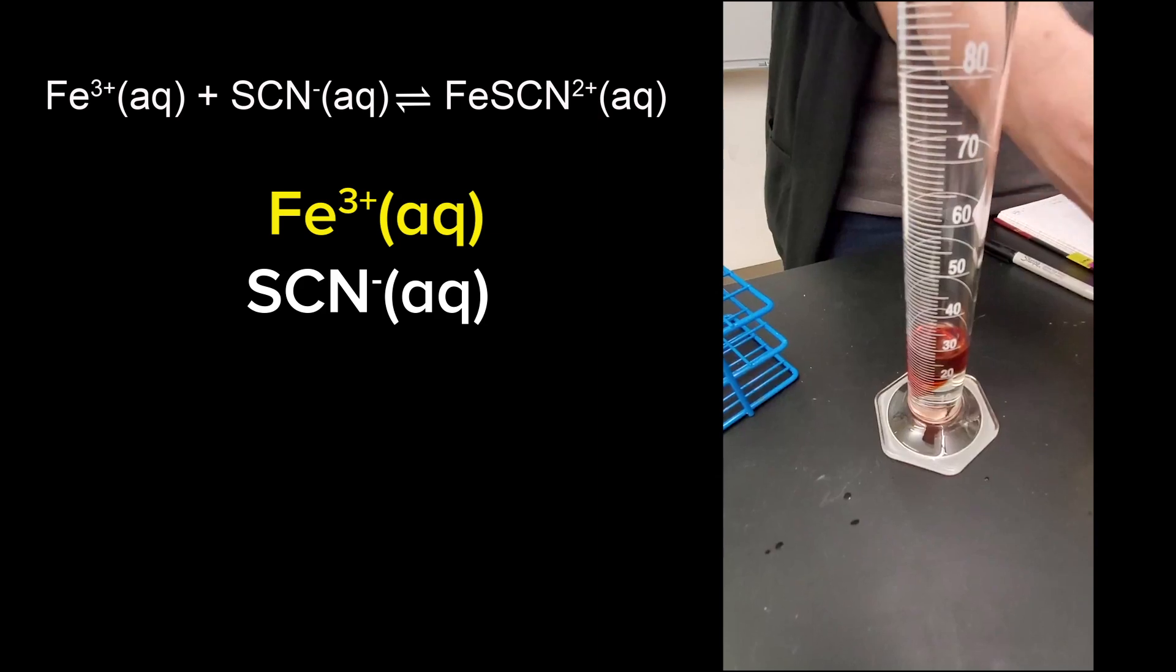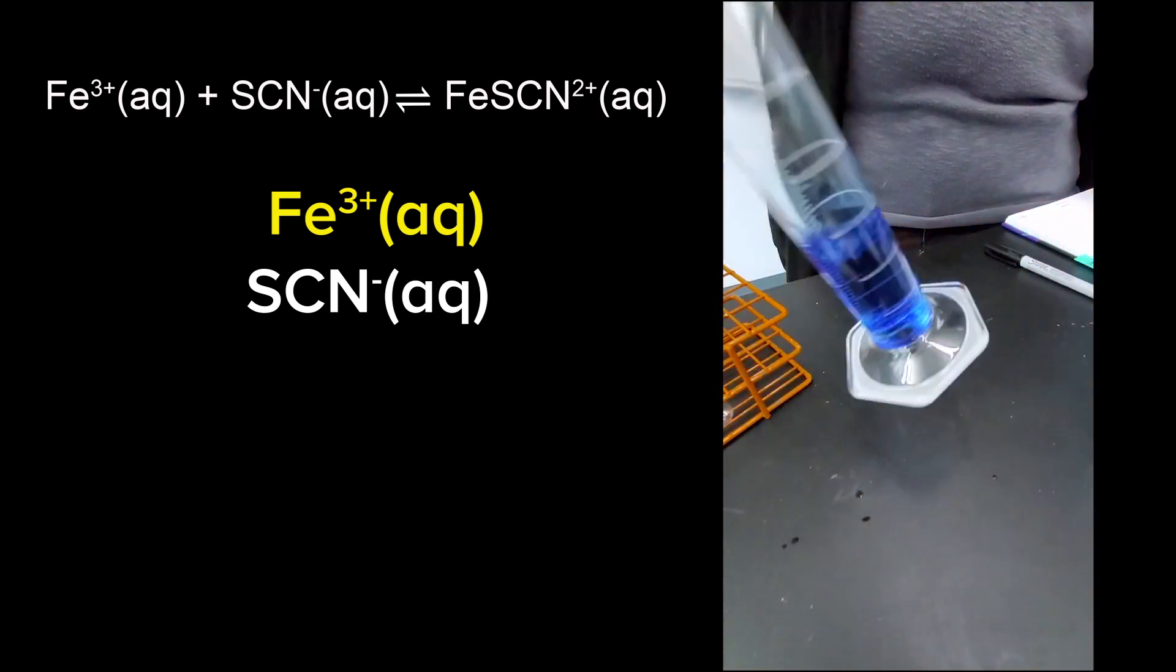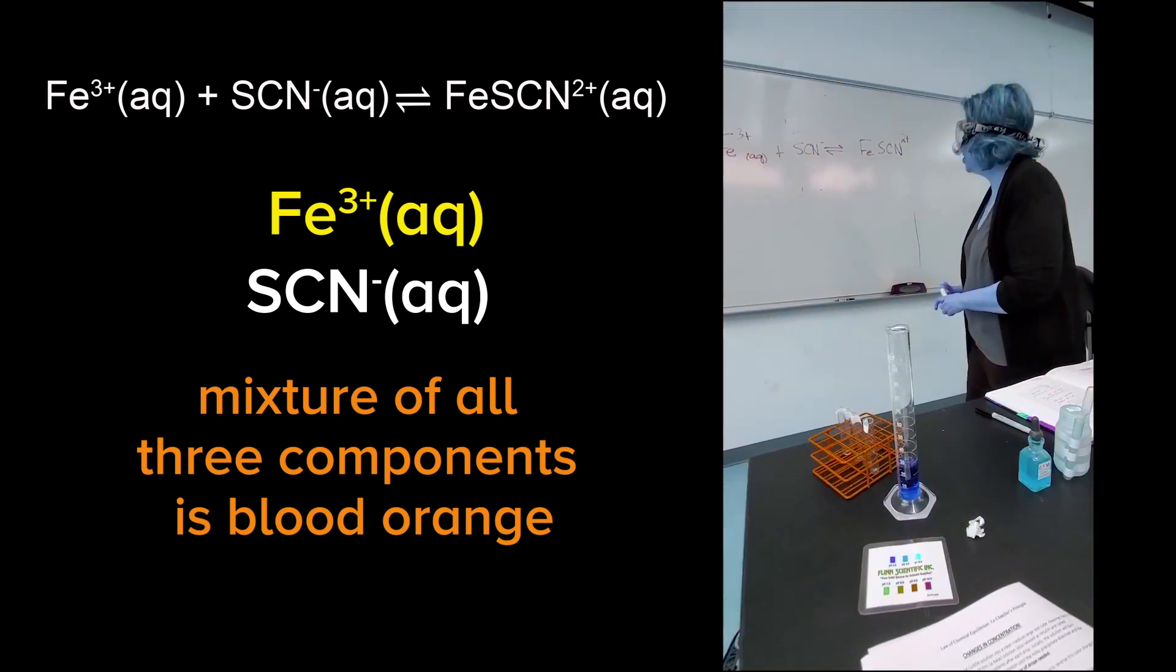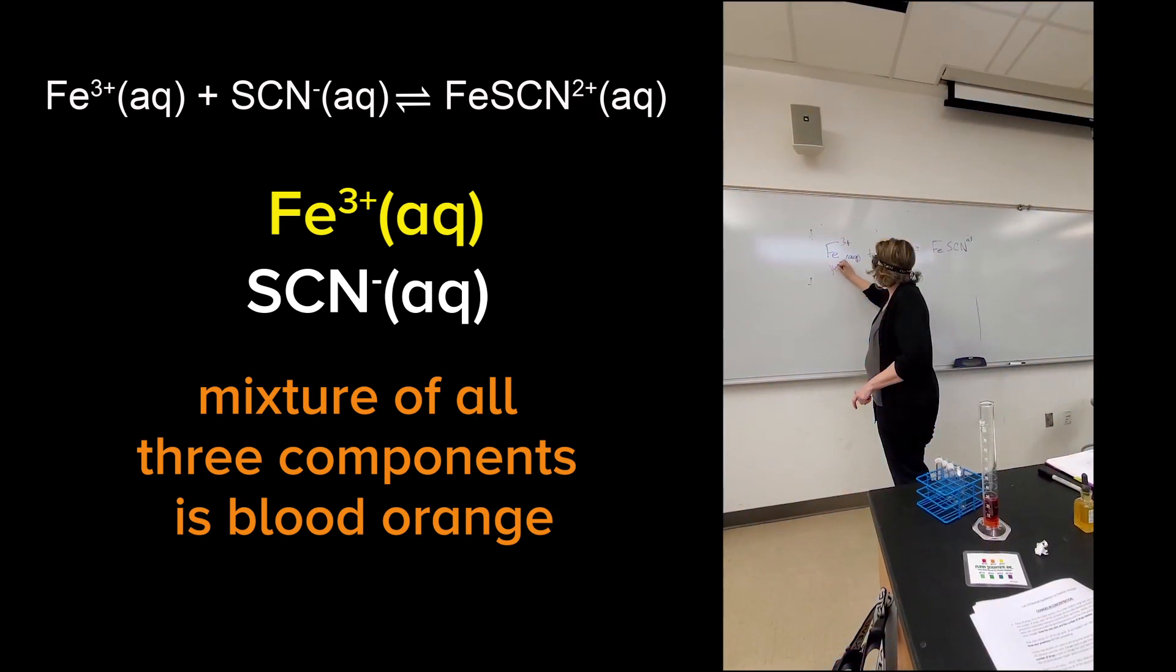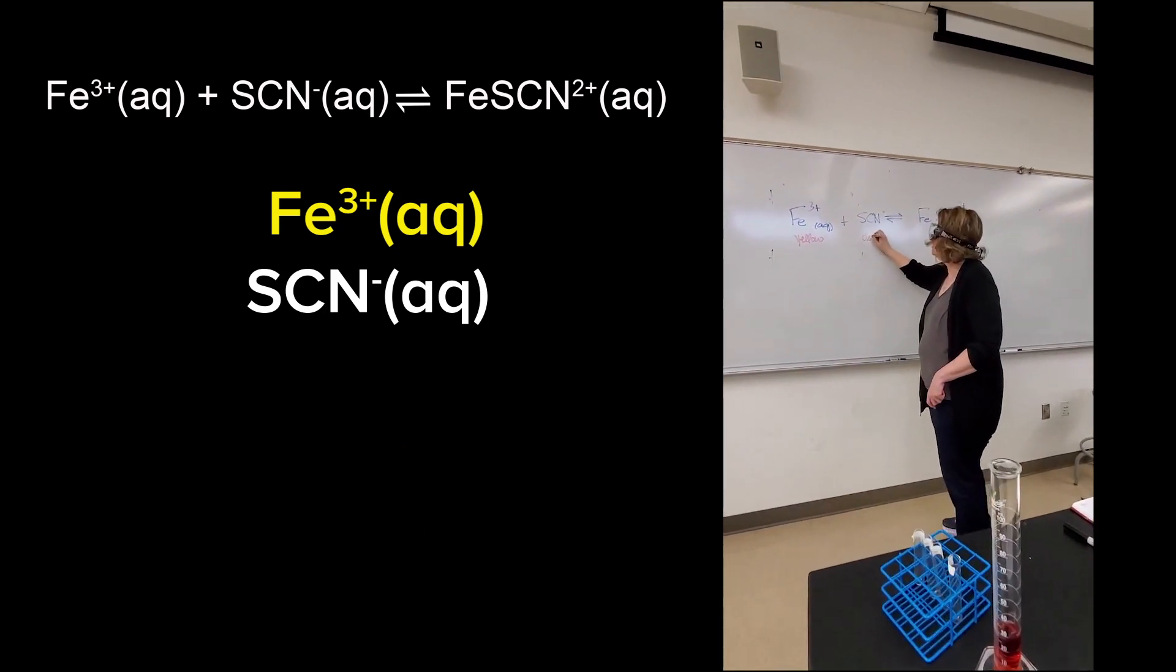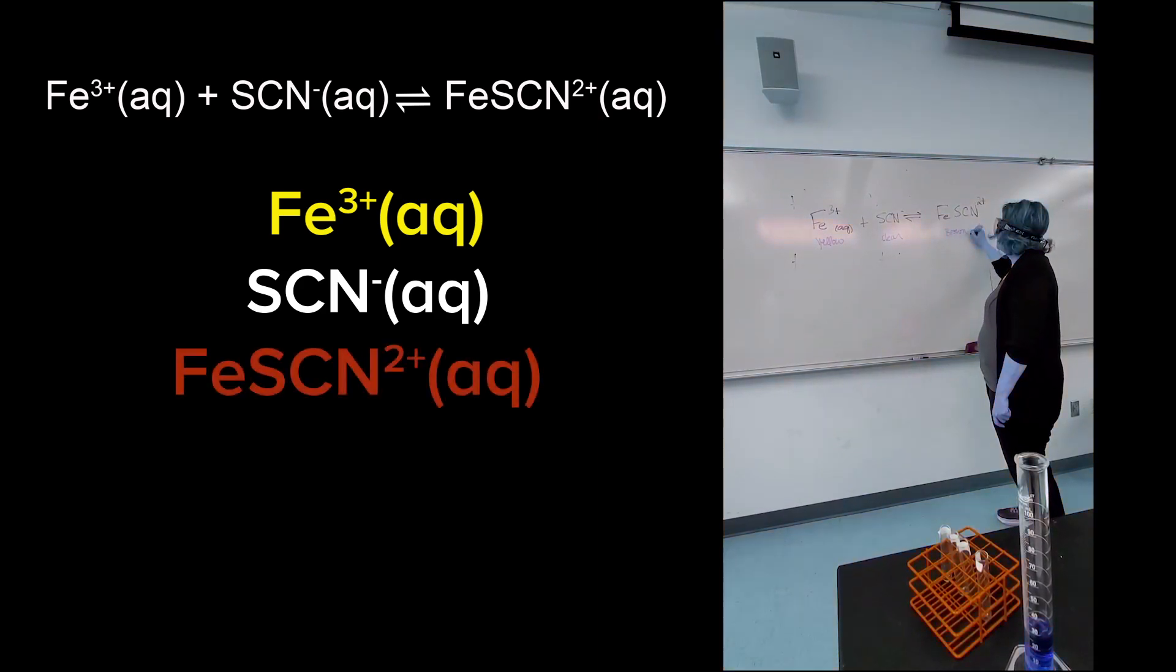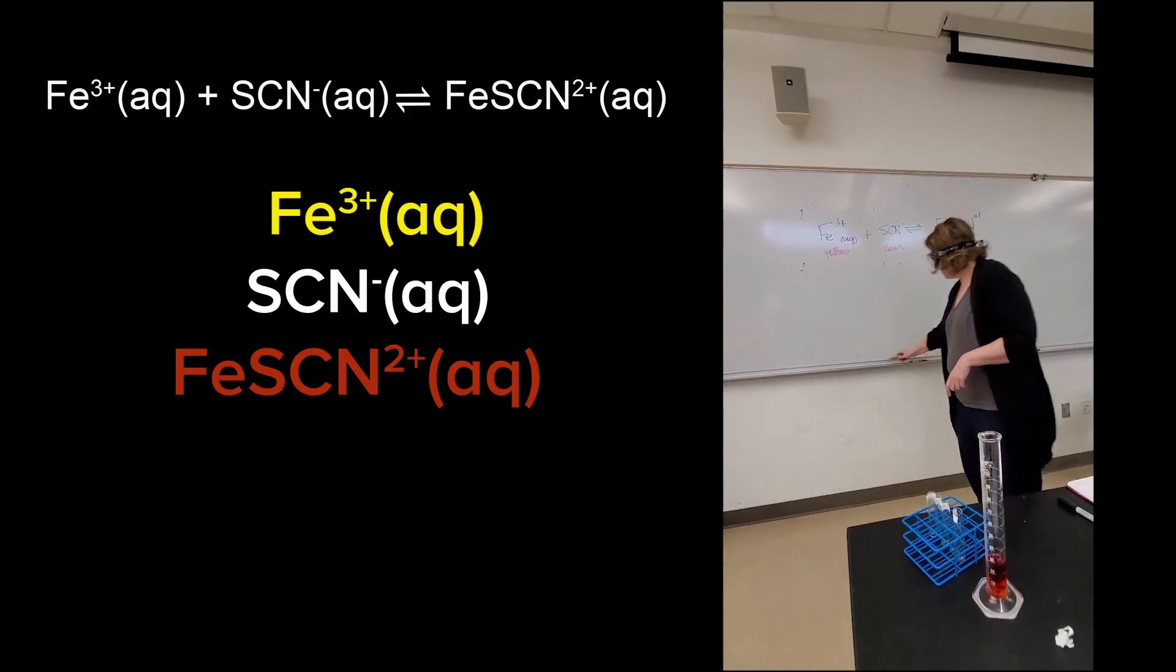So this may look familiar. We've done this. We've measured this one before. This complex is, what color would you say that is? Orange? Blood orange. Okay. So the equilibrium that I just established is that I started with the iron, which is this yellow color. And then I added the thiocyanate, which is clear. And the complex ion is, I'm going to call it brown, red color.